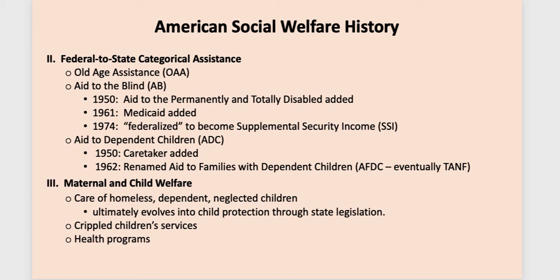The second part of the Social Security Act was federal-to-state categorical assistance — the federal government providing money to states for categories of individuals who needed assistance: old age assistance, aid to the blind, and aid to dependent children. These were for individuals who hadn't worked 40 quarters. Aid to the permanently and totally disabled was added after 1950, and Medicaid — the health insurance program for this population — was added as well. In 1974, all of this was federalized to become SSI, essentially the Social Security program for individuals who haven't worked their 40 quarters. It is a needs-based program, closer to what we consider welfare. Quite frankly, Social Security is every bit as much a welfare program as SSI — the individuals working at any given time are the ones who fund your retirement. That is the essence of public welfare.